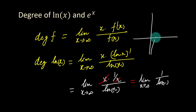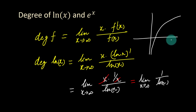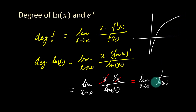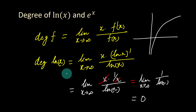When we draw the graph of natural log of x, we see that when x tends to infinity, ln(x) approaches infinity. This means in the limiting condition it will approach 0. So the degree of natural log of x is equal to 0.